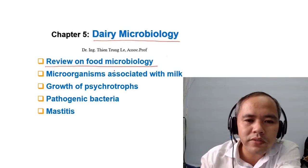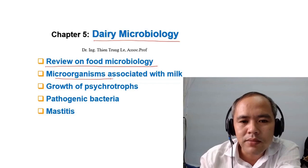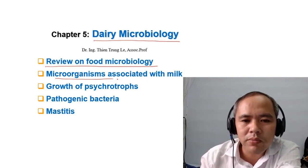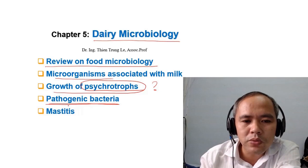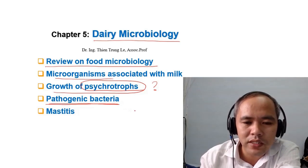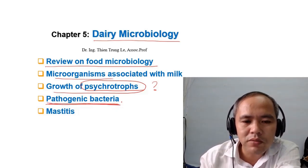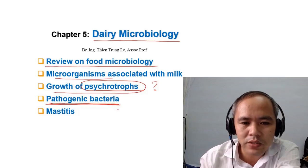So the first part is a review, and the second part we discuss the microorganisms associated with milk. Then we discuss the growth of psychrotrophic bacteria — what psychrotrophic means we will discuss at that point. We also briefly cover bacteriogenic bacteria, which is quite important in milk, dairy products, and other food products, as by several chances they can contaminate and grow and cause food poisoning.